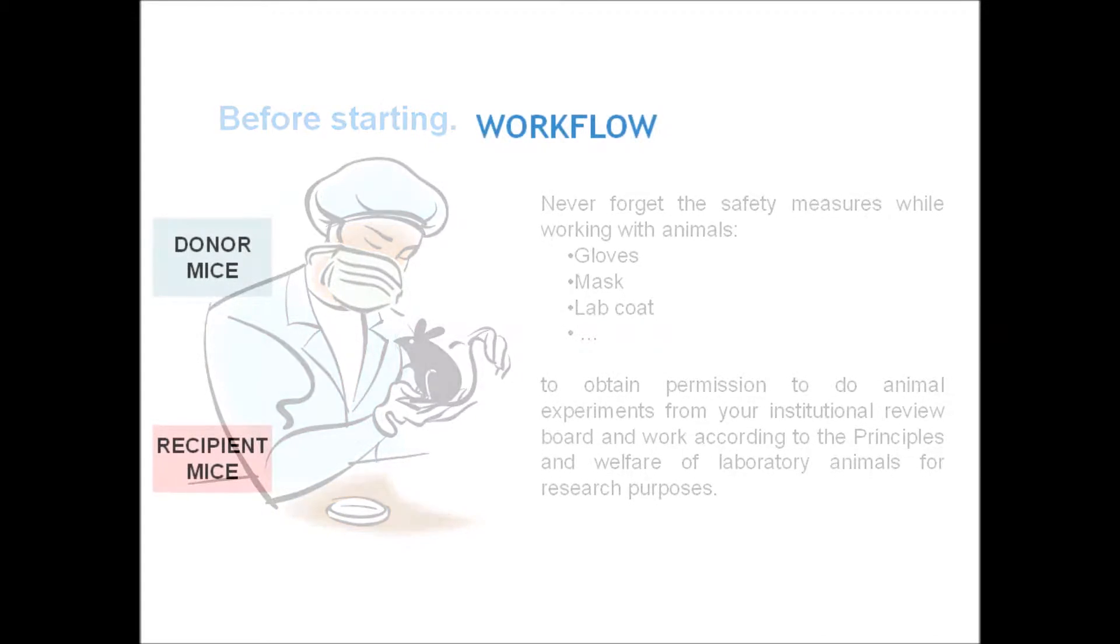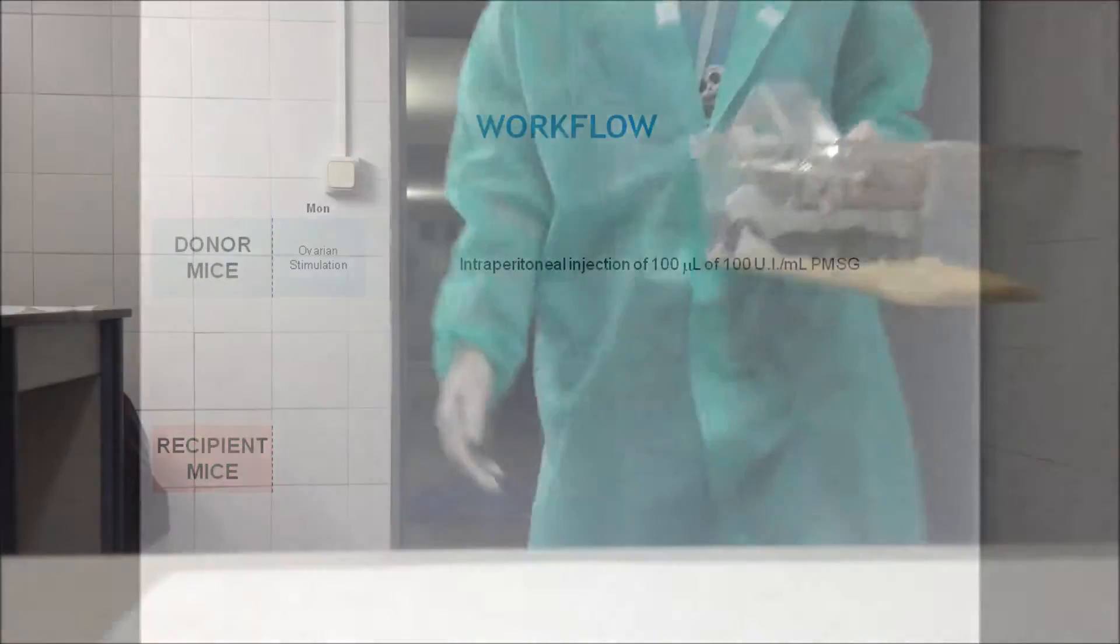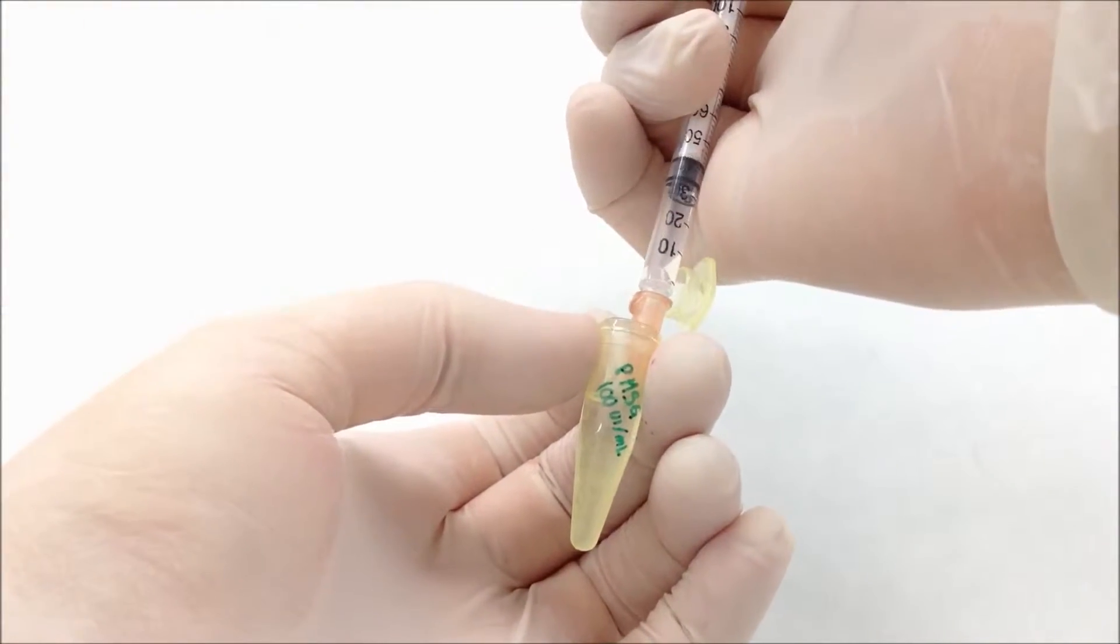We will summarize the step-by-step workflow of this procedure. The donor mouse and recipient female mouse protocols are performed in parallel in the same week. Monday starts with the donor mice. They are ovarian stimulated with 10 units of pregnant mare serum gonadotropin. The stock is prepared with 100 units per milliliter and 100 microliters per mouse should be injected.